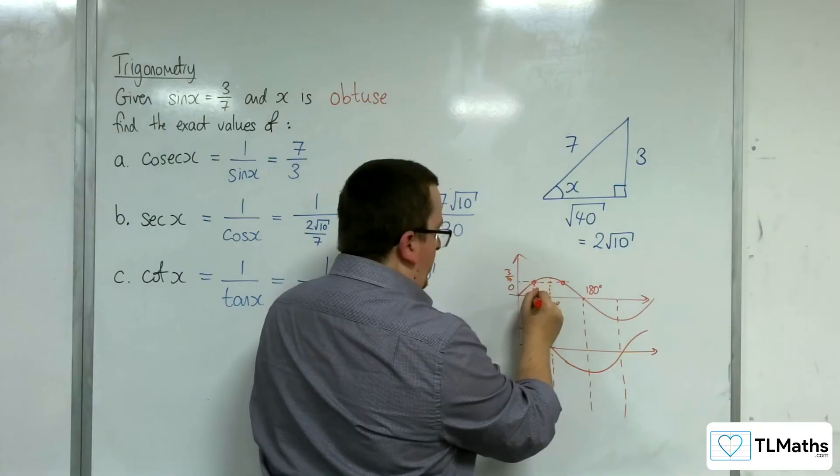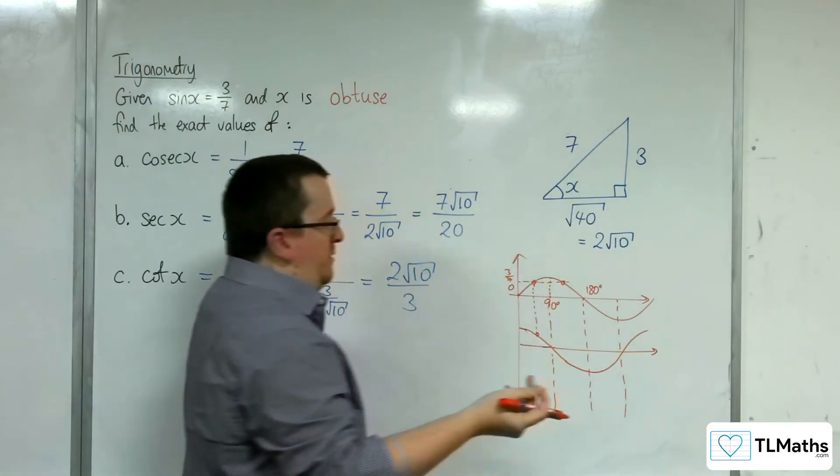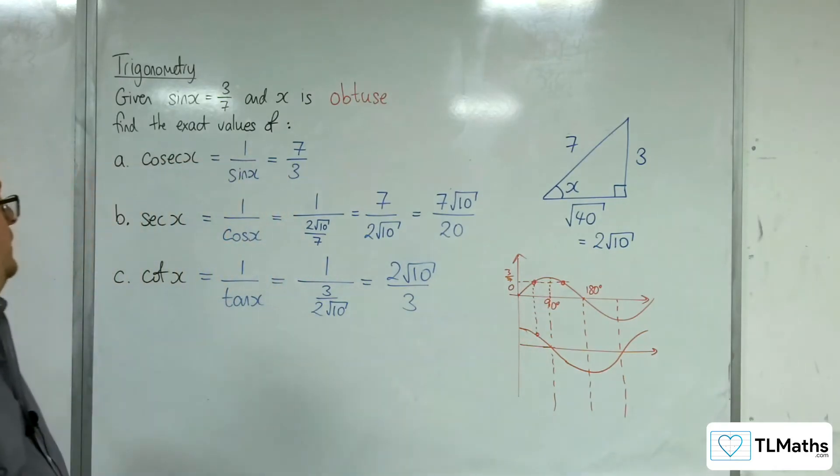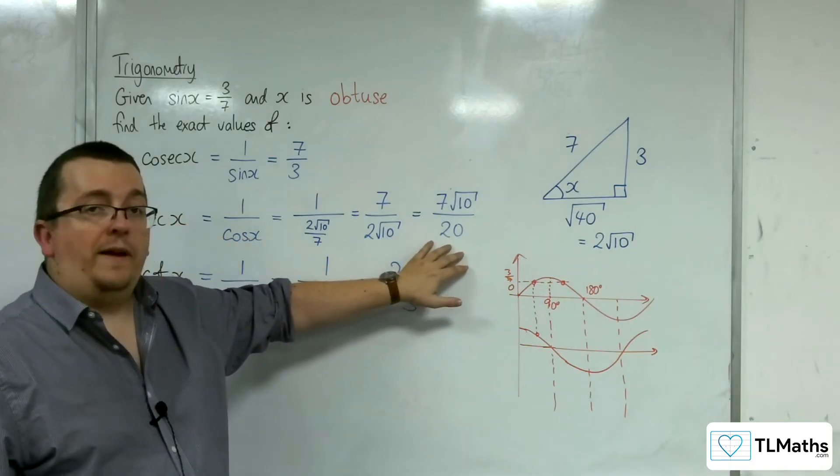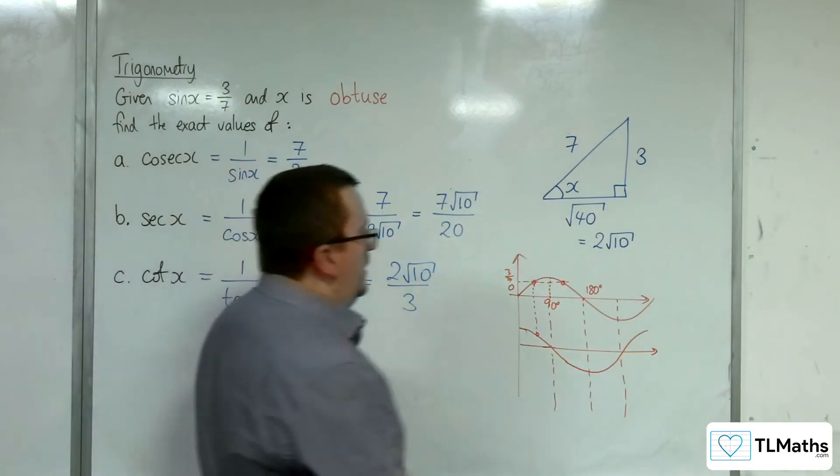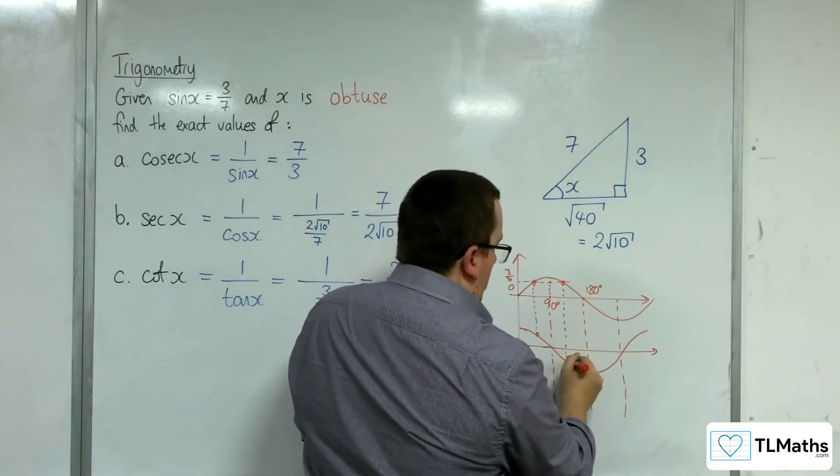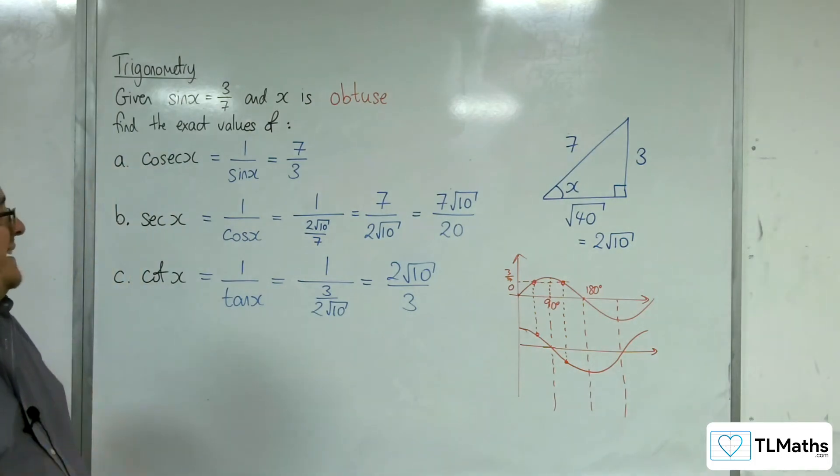For cosine, as you trace these values down, when x is acute (between 0 and 90), cosine is positive—above the x-axis. That's why for sec we get this positive value. But when x is obtuse, we hit the curve below the x-axis, so the value is actually negative.